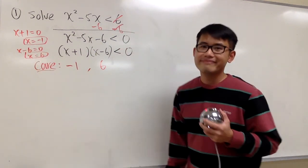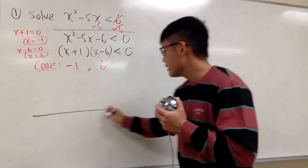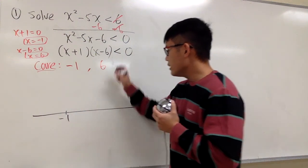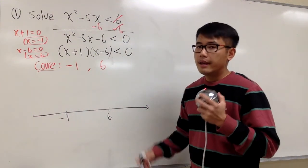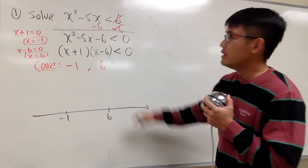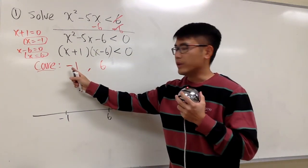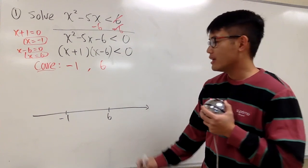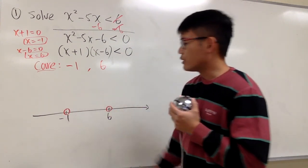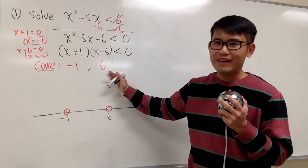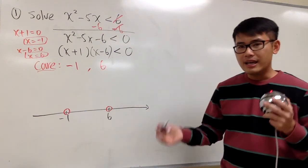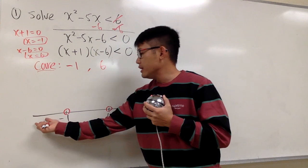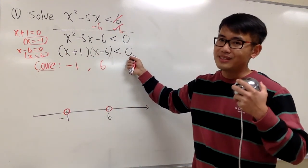Now we use the number line and label the numbers we care about. Smaller numbers go on the left — that's negative 1 — and the bigger number, 6, goes on the right. We refer back to the original inequality: it's strictly less than, no equal sign, so we do not include these two numbers. We use an open circle at negative 1 and an open circle at 6. This gives us three intervals on the number line, and we need to pick a test value in each interval.